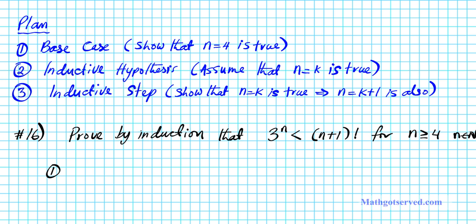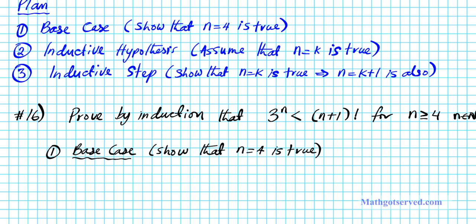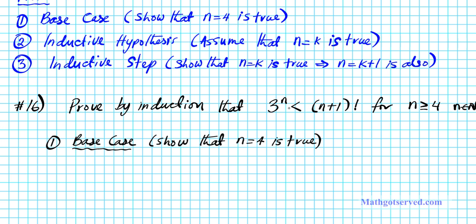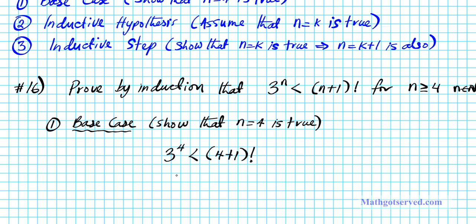Let's start with part one, the base case. For the base case, we want to show that the foundation is true — show that n equals 4 is true, since the smallest integer value satisfying n greater than or equal to 4 is 4. So we're going to plug 4 into both sides of the inequality and see if we end up with a true statement. We're going to have: is 3 to the 4th less than 4 plus 1 factorial? So 3 to the 4th is the same as 9 squared, which is 81.